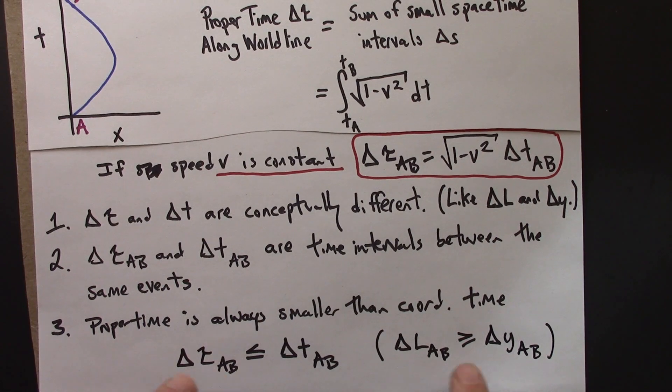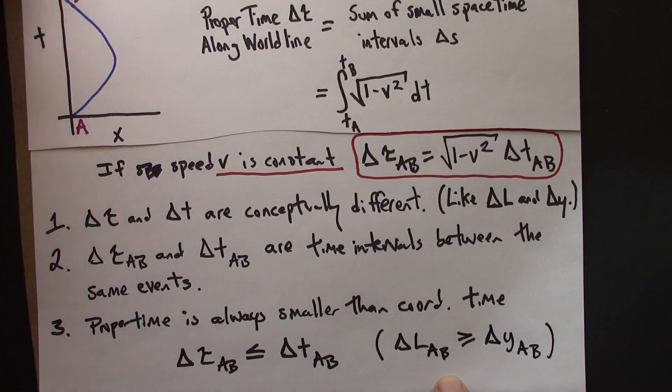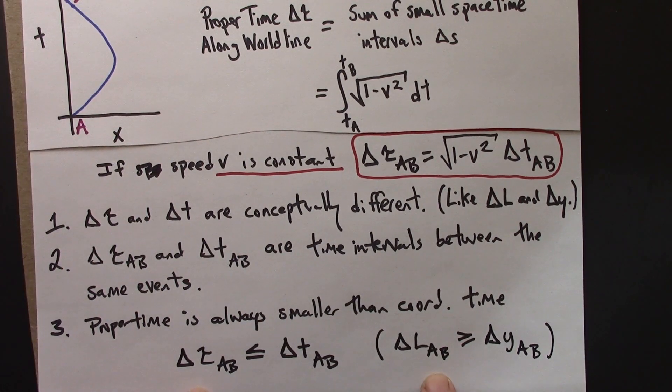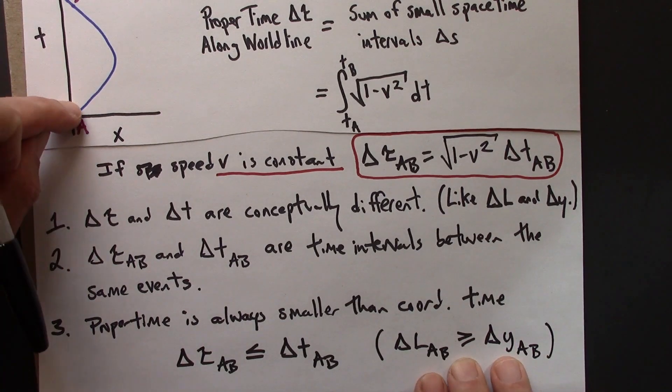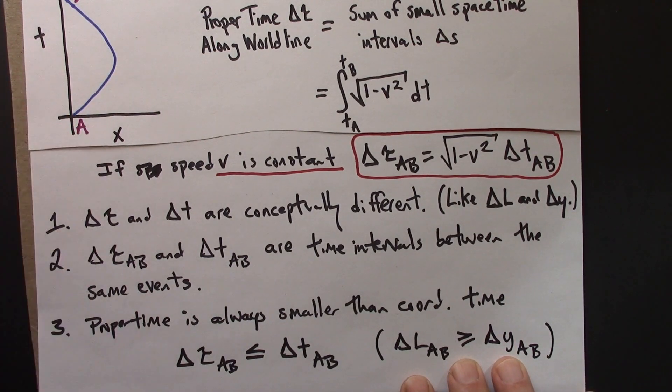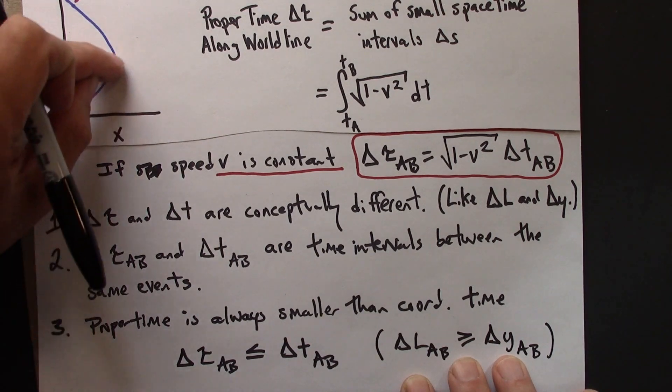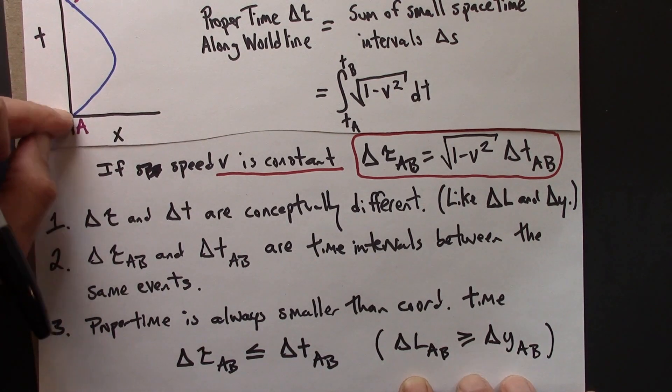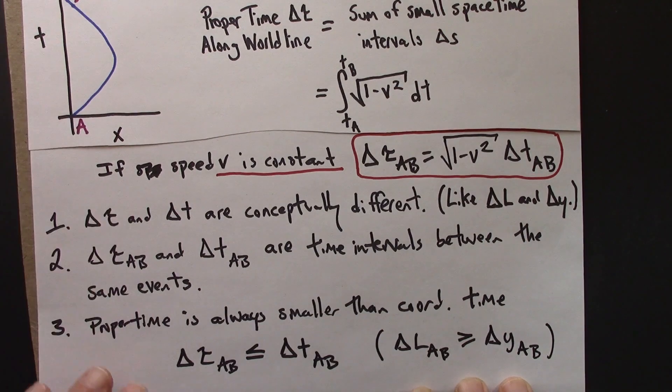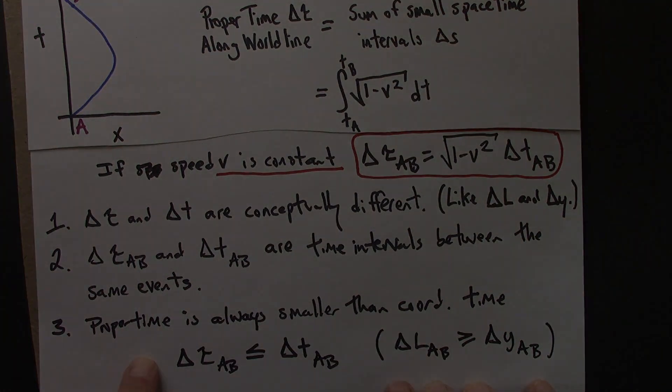So this is weird, but it's a reminder that space-time intervals and proper time intervals in general can't be read directly off of space-time diagrams. So again, the proper time is always smaller than the coordinate time between two events.